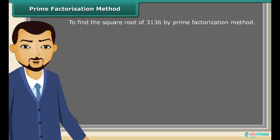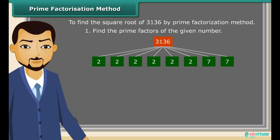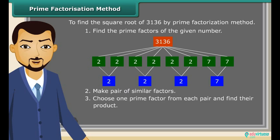Now we will try to find the square root of a number by prime factorization method by following some steps. First of all find the prime factors of the given number. Now make pair of similar factors. After that choose one prime factor from each pair and find their product. So the product thus obtained is the square root of the given number.